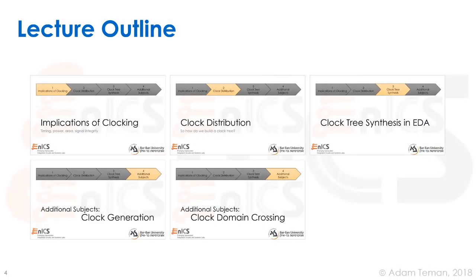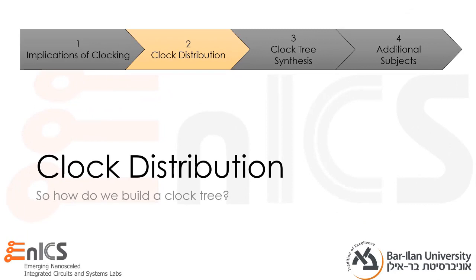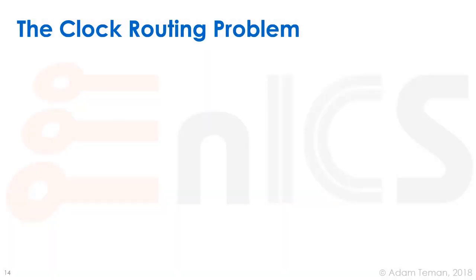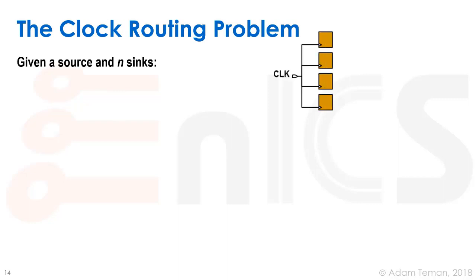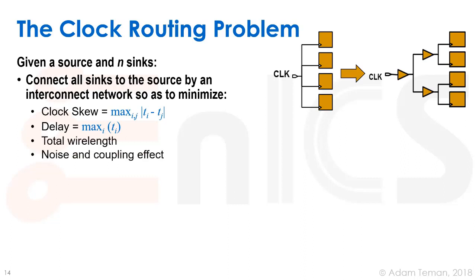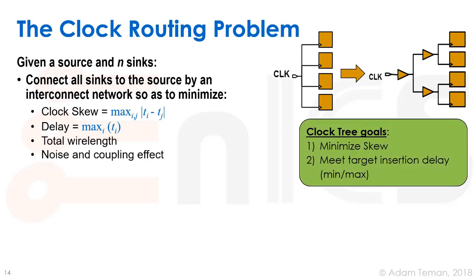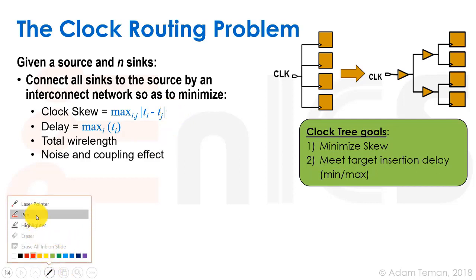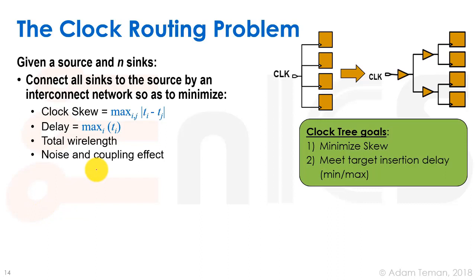We finished our implications on clocking and now we're going to go into clock distribution — how do we build an actual clock tree. Let's discuss the clock routing problem: we have a source where the clock comes from and N sinks where the clock needs to go. In this case we have four flip-flops. We need to connect all the sinks to the source by an interconnect network, trying to minimize clock skew, minimize delay, minimize total wire length, and minimize noise and coupling effects.